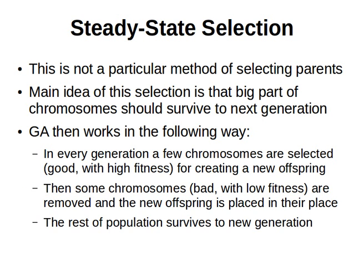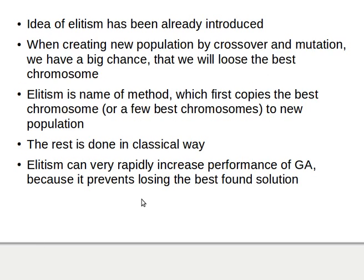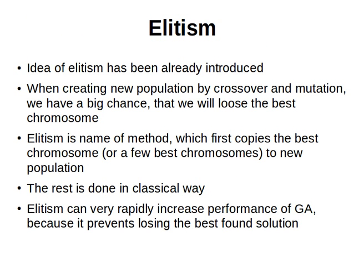One more thing I'd like to mention here is the idea of elitism. We mentioned elitism before: when we create new populations after applying crossover and mutation, there is a big chance that we will lose the best chromosome or chromosomes. Elitism is the name of the method where we first copy the best chromosome — one or more — to the new population.